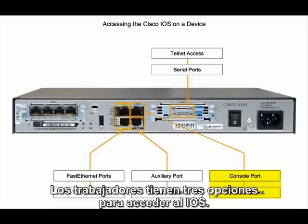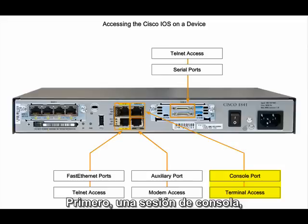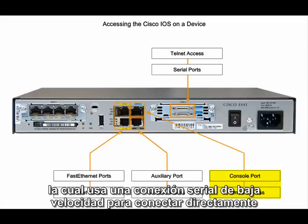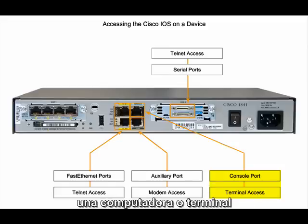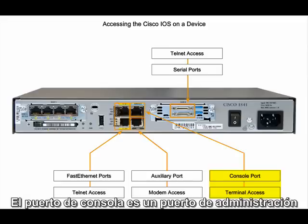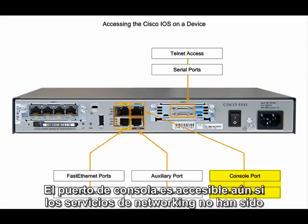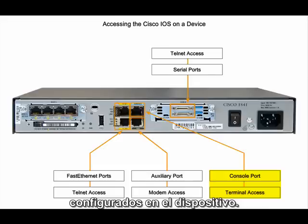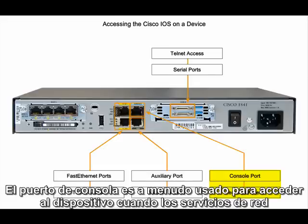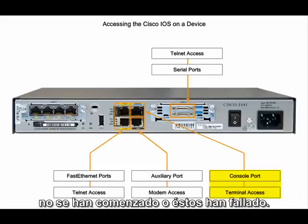Networkers have three ways to access the IOS. First, a console session, which uses a low-speed serial connection to directly connect a computer or terminal to the console port of the router or switch. The console port is a management port that provides out-of-band access to a networking device, and is accessible even if no networking services have been configured. It is often used to access a device when networking services have not been started or have failed.